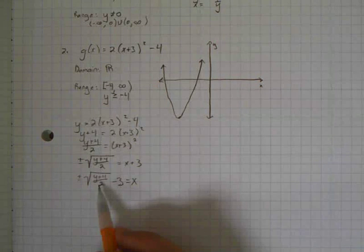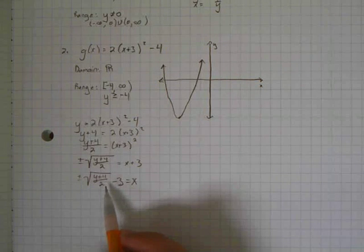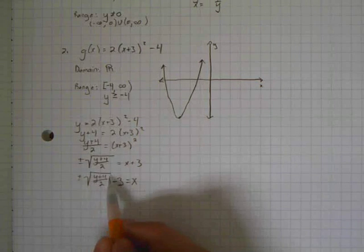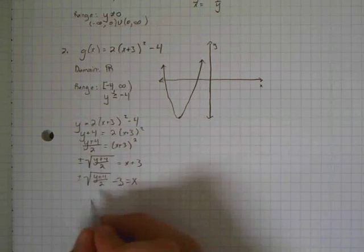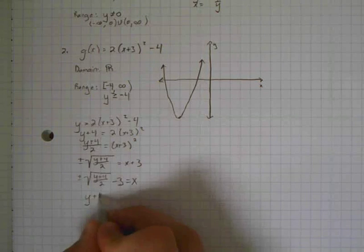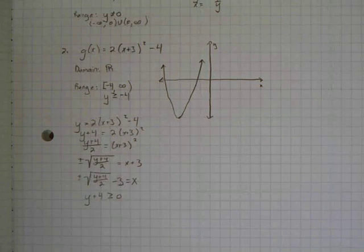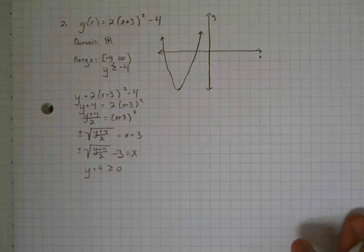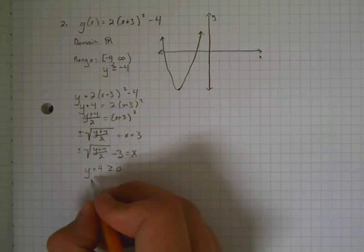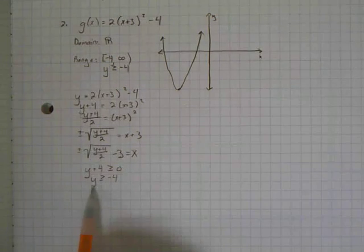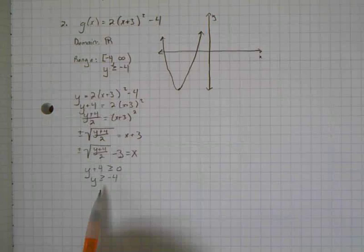The divide by 2 is not going to change the positive or negative sign of anything, it's just going to scale it a little bit. So the only thing that would change the positive or negative sign is the y plus 4 part. We need to have y plus 4 be greater than or equal to 0 in order to keep this from having non-real or imaginary solutions. Subtract 4 and you get the range of y is greater than or equal to negative 4.